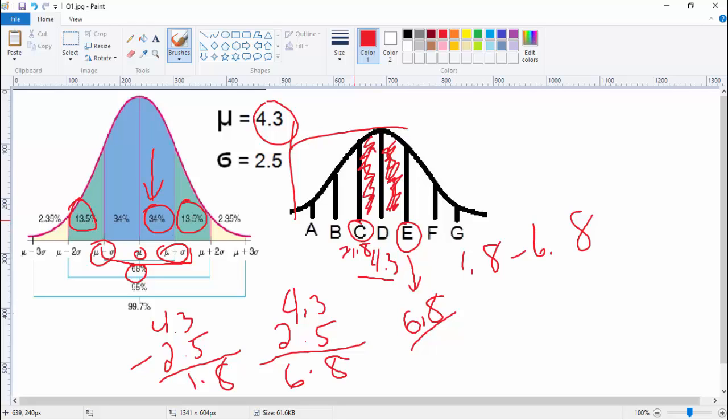Now, how do you do F, this one up here? Well, there are two ways, but they get you the same thing. If you already have E, which is 6.8, you can just add one more standard deviation, which is 2.5. You can just do that. And then 8 and 5 is 13, carry the 1, 6, 1, 7, 8, 9. And then you get 9.3 here.